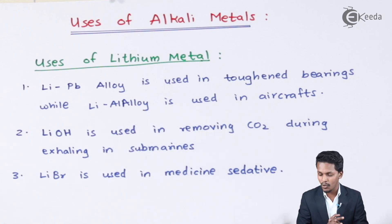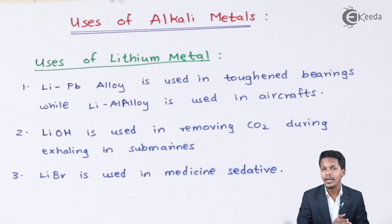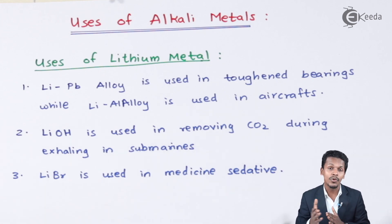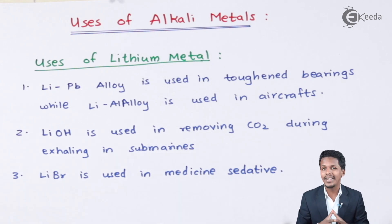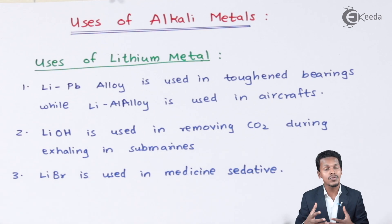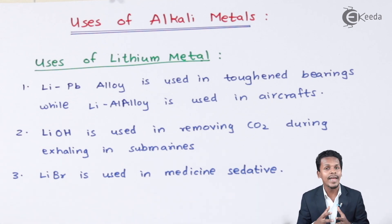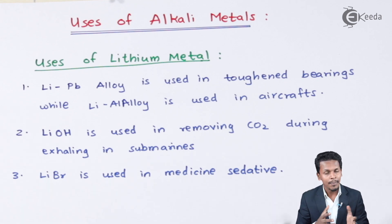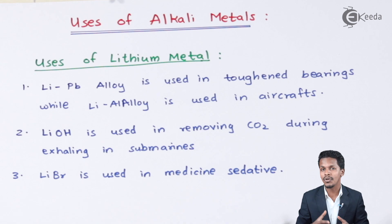Lithium belongs to the S-block, lead belongs to the D-block, and aluminum belongs to the P-block. By mixing these metals we can make an alloy, and alloys have more strength compared to the parent metal, making them useful for toughening applications.